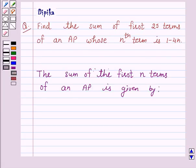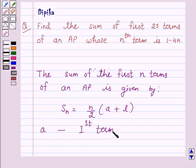Now we know that the sum of the first n terms of an AP is given by Sn equals n over 2 into a plus l, where a is the first term of an AP and l is the last term of an AP.